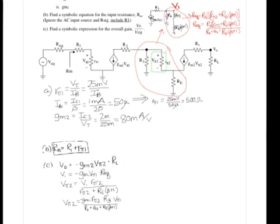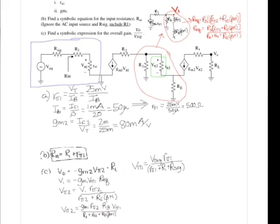Plugging in V1 in this equation gives minus GM1, Vpi1, R equivalent. When R equivalent is plugged into this equation, the Rpi2 plus RE times beta plus 1 on the top cancels with the bottom of the Vpi2 equation and reduces to minus GM1, Rpi2, R3 times Vpi1 divided by R3 plus Rpi2 plus RE times beta plus 1.